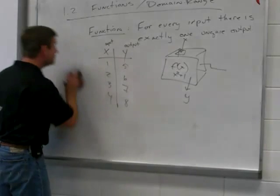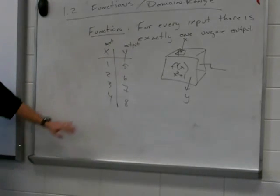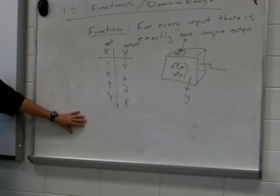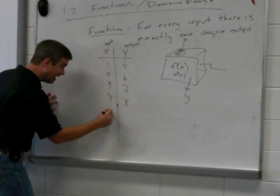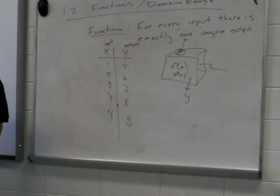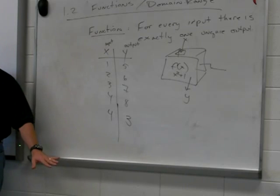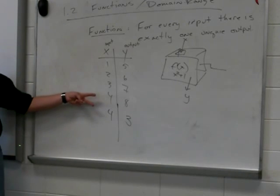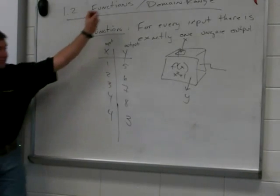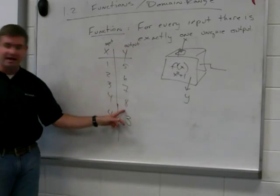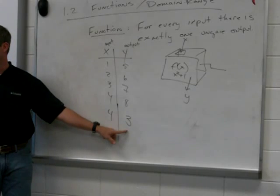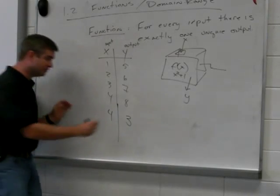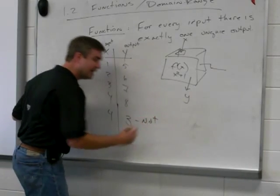Can somebody give me an example of a point that I could add that would make it not a function? If I stuck in four, and I got three, then it would no longer be a function. Because I stuck the same input, right? I put four in, turned the crank, eight came out. I put four in, I turned the crank, three came out. So it is no longer a function. This makes it not a function.